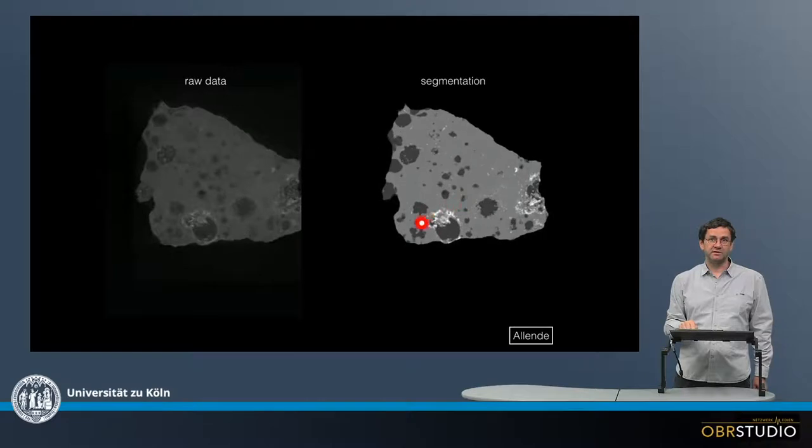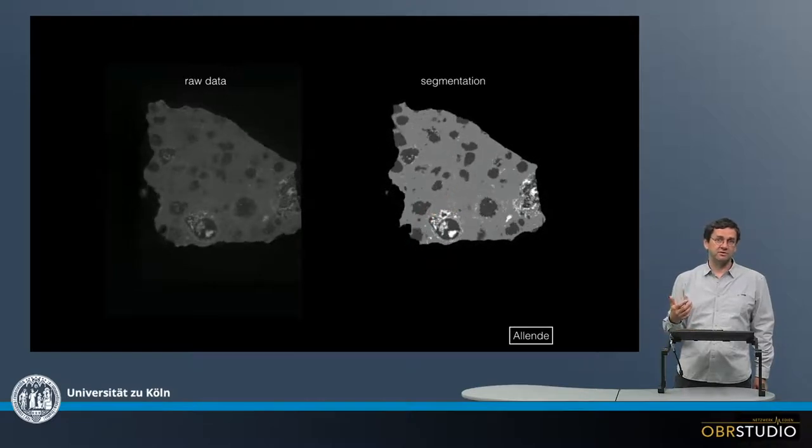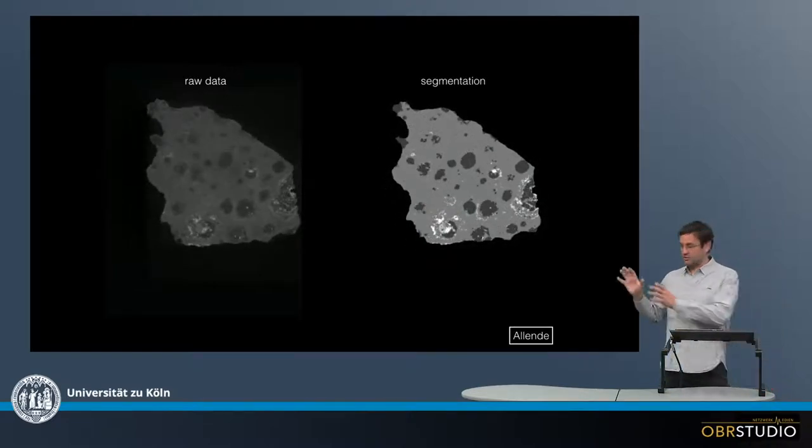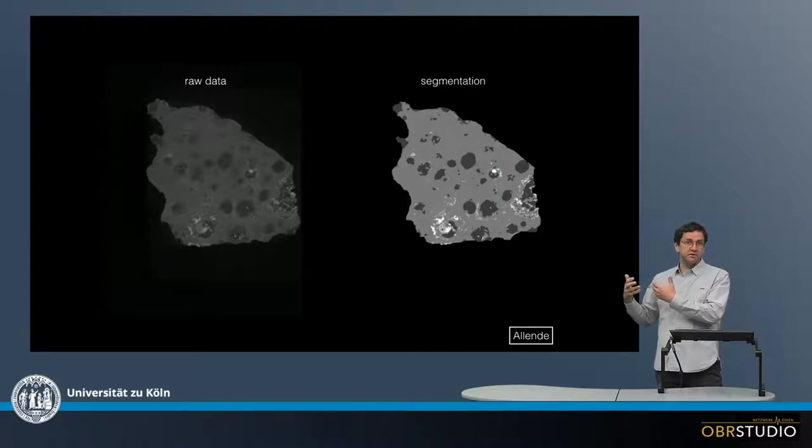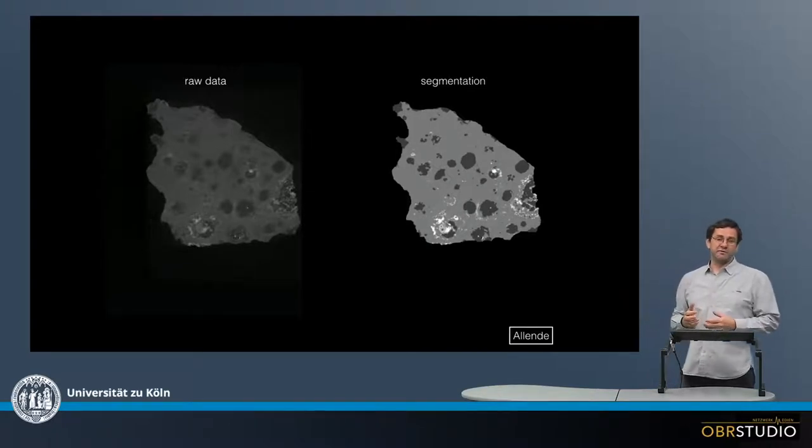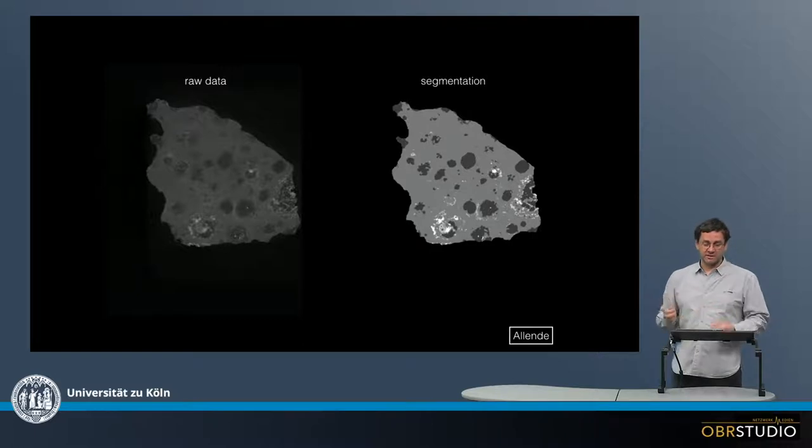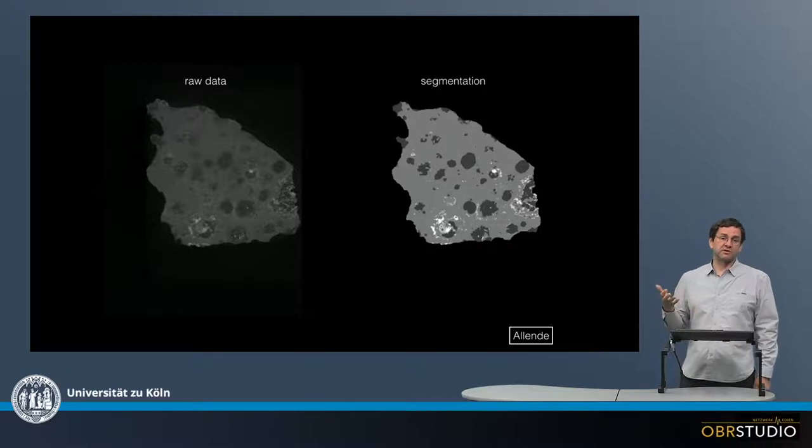You can see here how the opaque phases change throughout this chondrite. You can use this to determine the real three-dimensional amount of opaque phases in the sample, in the chondrite, which is quite important. The opaque phases carry a lot of iron, so this is important to know about the iron distribution.